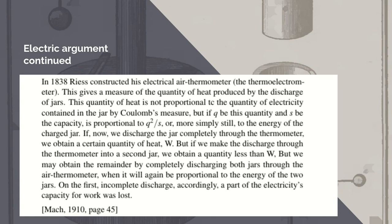So this is quoting directly from Mark. He then goes on to say, in 1838 Rice constructed his electrical air thermometer. You can view videos of a Rice electrical air thermometer being used on YouTube if you do a search under that. The thermoelectrometer. This gives a measure of the quantity of heat produced by the discharge of jars. He's talking about laden jars. This quantity of heat is not proportional to the quantity of electricity contained in the jar by Coulomb's measure. But if Q be this quantity and S be the capacity, it's proportional to Q squared over S, or more simply to the energy of the charged jar. If now we discharge the jar completely through the thermometer, we obtain a certain quantity of heat, W. But if we make the discharge through the thermometer into a second jar, we obtain a quantity less than W. So I'll show you what the experiment in a series of images next.